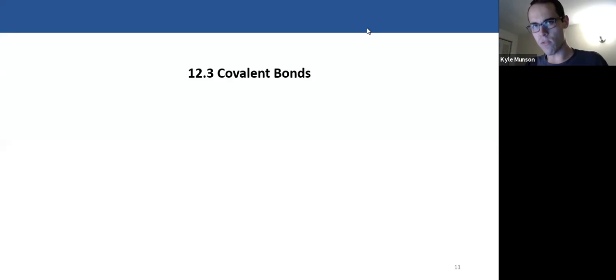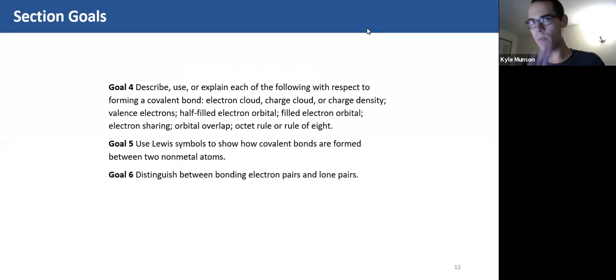Now we're going to be talking about covalent bonding. And the difference really, well before we do that, our goals are we want to be able to explain the differences and also talk about covalent bonding in terms of electron cloud, charge density, valence electron, things like that. This thing called an octet rule. We want to use Lewis symbols to show how covalent bonds are formed between non-metal atoms and distinguish between bonding electrons and lone pairs.